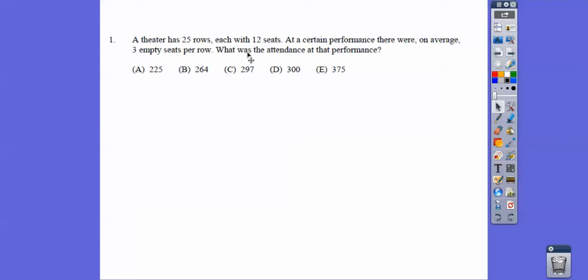So what was the attendance? That's going to be 25 times 9 right there. So 25 times 9, I know 25 times 10 is 250, so 25 times 9 is 250 minus 25. Sometimes they let you use a calculator, sometimes they don't. Anyways, choice A right there.